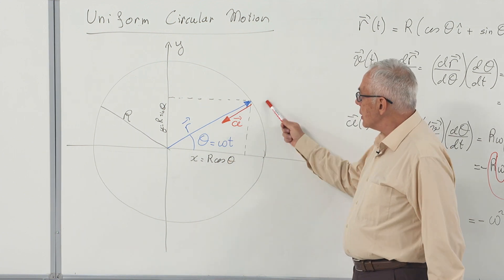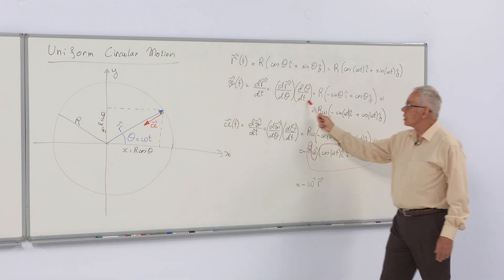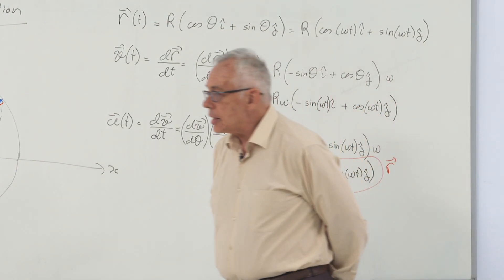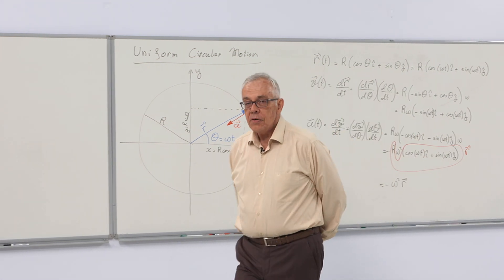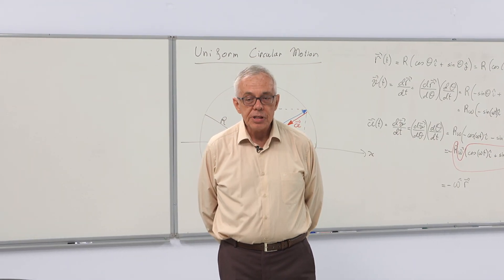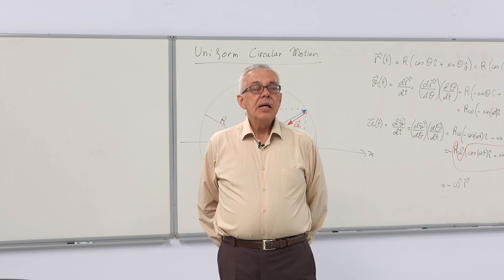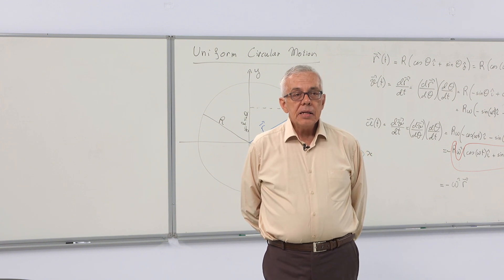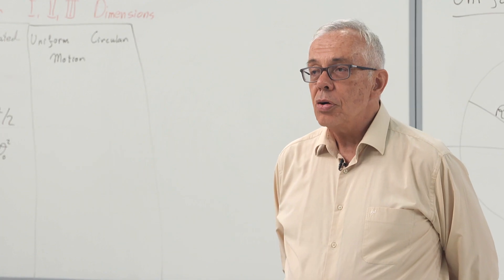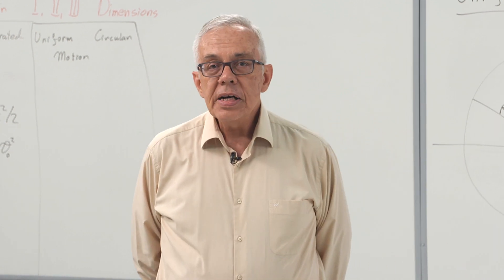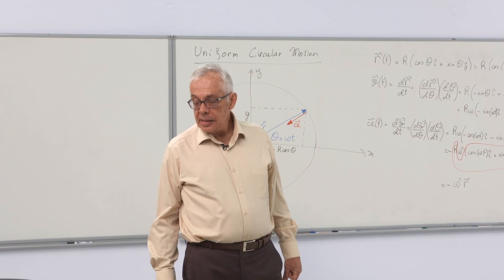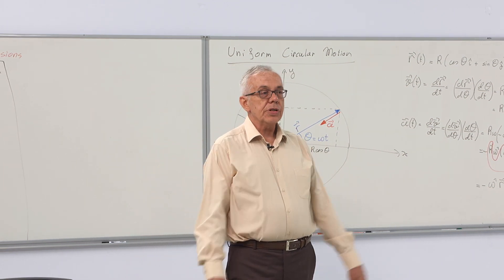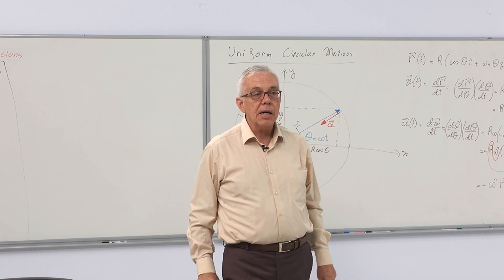Now let's look at the direction of the velocity. To find the direction of the velocity, we will take a scalar product of the velocity with the position vector. If the scalar product is zero, it means that the velocity is tangential — perpendicular to the radius. If the scalar product equals the product of the magnitudes, then the two vectors are parallel.